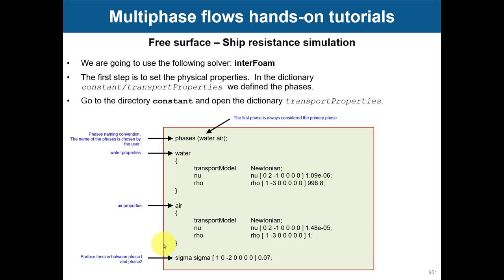Surface tension is another model. For larger-scale systems it's not always necessary — you can set it to zero. For small-scale systems where surface tension is a significant force, you need to include it. In this case it's not strictly necessary, but I left it so you can see how to set it up. Be aware it can slow down computation and may add instability.